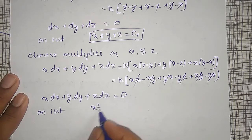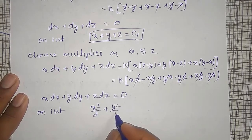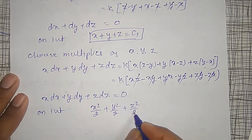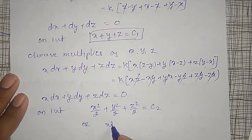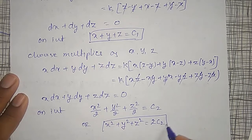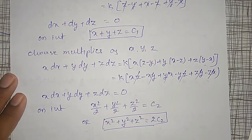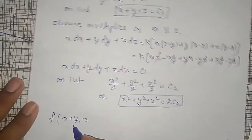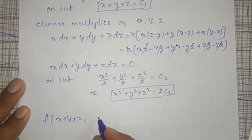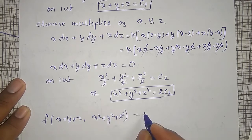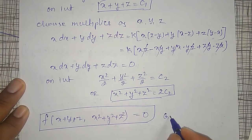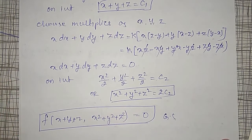On integration: X²/2 + Y²/2 + Z²/2 = C2, or X² + Y² + Z² = 2C2 is the second solution. Combining the two solutions, F(X + Y + Z, X² + Y² + Z²) = 0 is the required general solution. Thank you friends, please subscribe to my channel and leave comments.